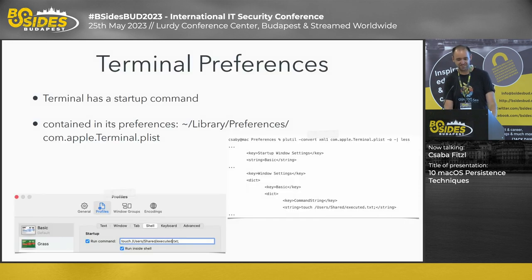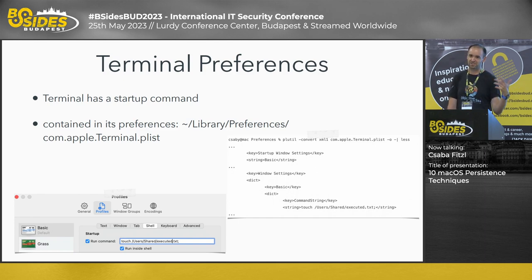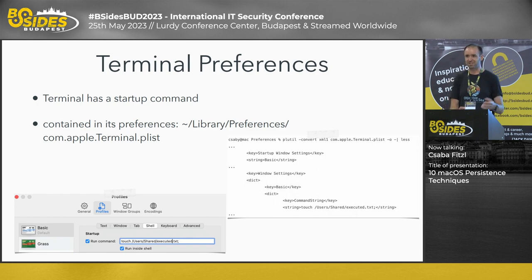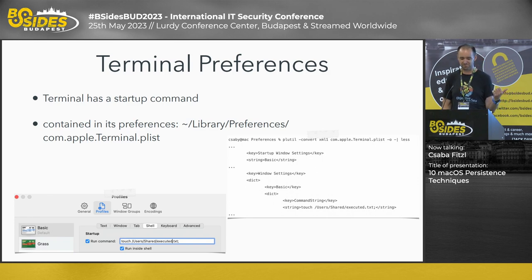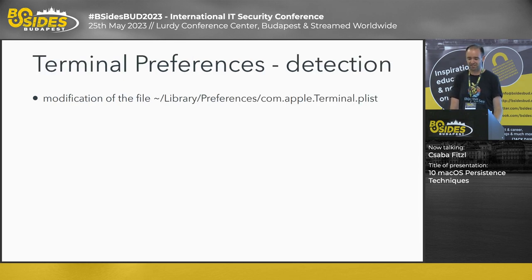The next one is terminal preferences. Terminal, in its preferences, contains an option for a startup command — basically a shell command. So whenever you launch Terminal, you can run a custom command. This is similar to shell startup files, but this is set inside Terminal's preferences. This command can be found in the Terminal preferences file at Library/Preferences/com.apple.terminal.plist. Detection is really just monitoring the modification of this file.